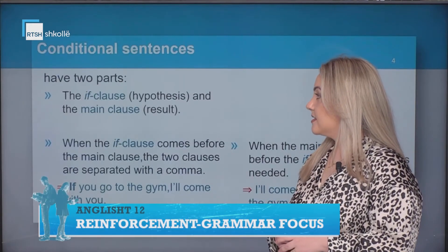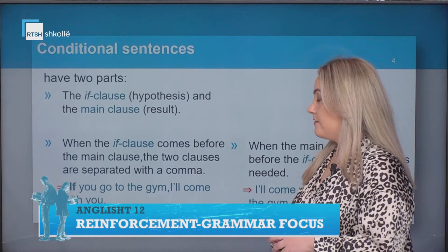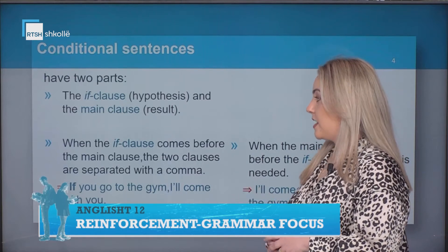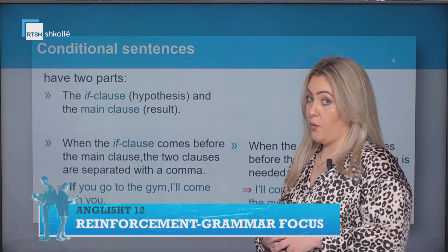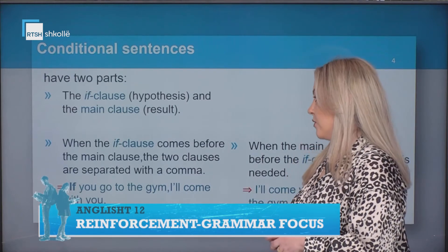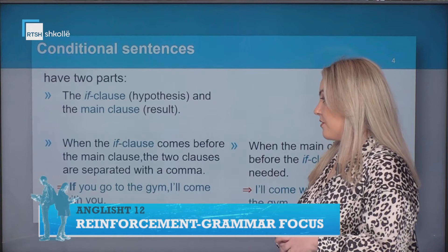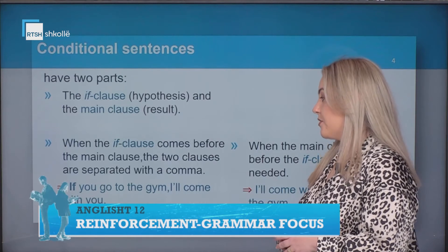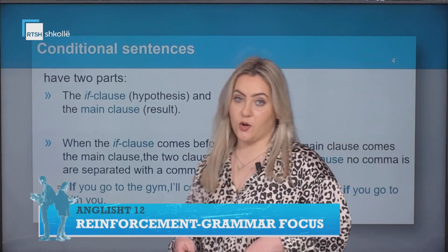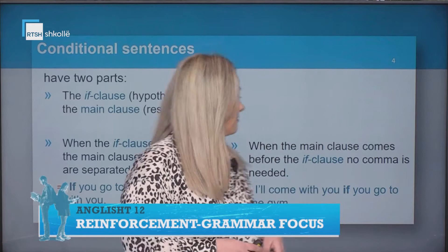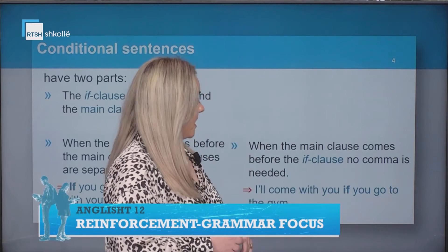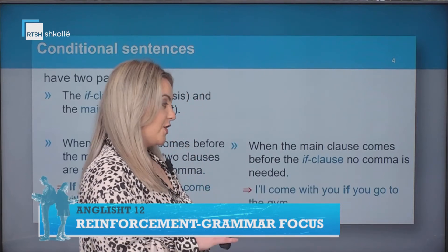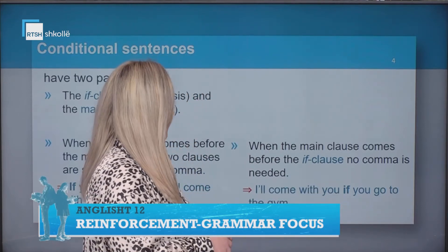Conditional sentences, as you may know, have two parts: the if clause and the main clause. When the if clause comes before the main clause, the two clauses are separated with a comma. Also, when the main clause comes before the if clause, no comma is needed.